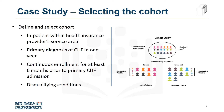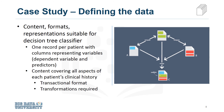Congestive heart failure patients who had also been diagnosed as having other significant medical conditions were excluded from the cohort, because those conditions would cause higher than average readmission rates and thus could skew the results. Then the content, format, and representations of the data needed for decision tree classification were defined. This modeling technique requires one record per patient with columns representing the variables in the model.